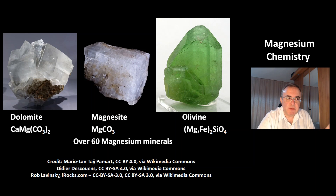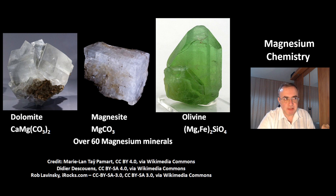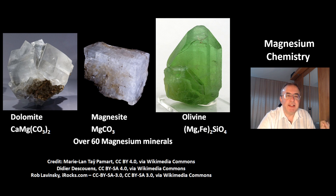These are three of over 60 magnesium minerals. At the left, that's dolomite — calcium magnesium carbonate. In the middle, magnesite, which is magnesium carbonate. And at the right, that's olivine, which is magnesium iron silicate.